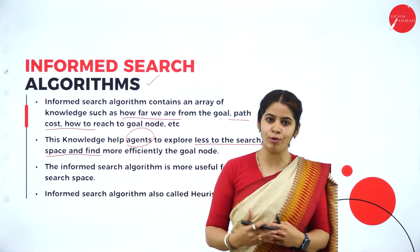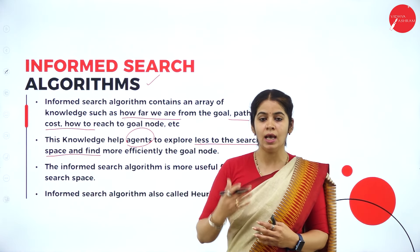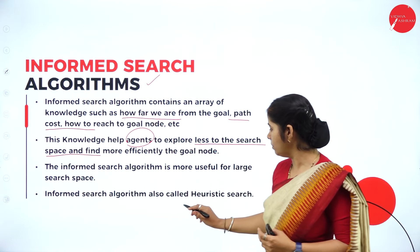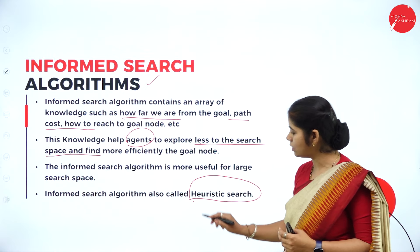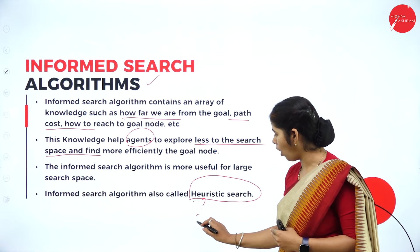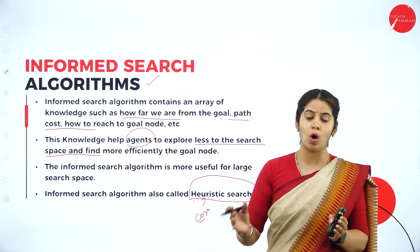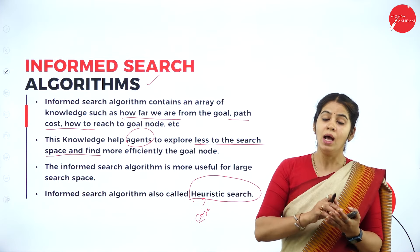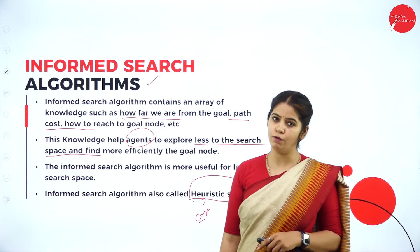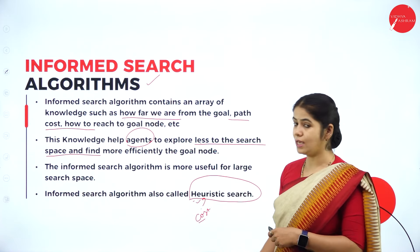When we have a large environment and large search space, those are the times we implement this type of informed search algorithm. Informed search algorithm is also called heuristic search. What is heuristic? It means some knowledge — we are providing some information such as what is the cost of the node, how much cost it takes to reach from one node to another, or what is the estimated cost to reach from the current node to the goal node. All this information is given as heuristic information in the form of heuristic functions.